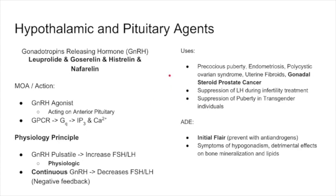We're using these drugs to block FSH and LH. Uses include precocious puberty, endometriosis, polycystic ovarian syndrome, syndromes where estrogen and testosterone may be too high, uterine fibroids before surgery, and gonadosteroid-sensitive prostate cancer — that's the biggest test question. A man started on this agent for prostate cancer may come back with symptoms of high testosterone because initially you have a flare — an agonist spike of FSH and LH. We prevent this initial flare with antiandrogens before giving it.